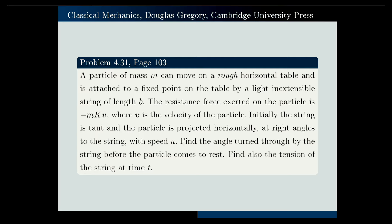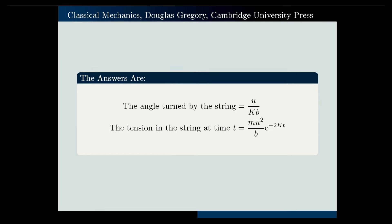It would be a good idea if you pause the video at this point and give it a try yourself. If you do the calculations correctly, the answers you get are: the angle turned by the string is equal to u over kb, and the tension in the string at time t equals mu² over b times e to the power of minus 2kt.